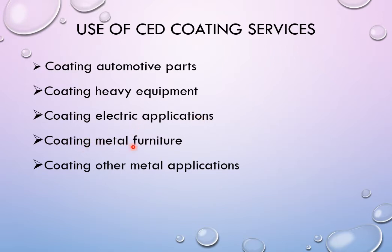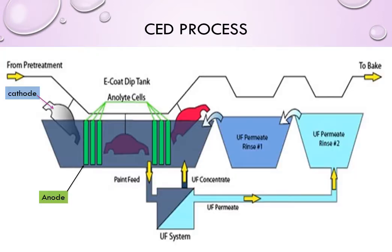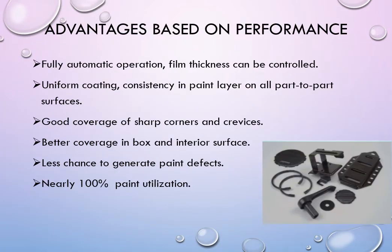You can also use it for coating metal furniture — you can easily apply the coating on components having some kind of metal furniture and other metal applications as well. It is a fully closed-loop system with no loss of paint. Whatever excess paint goes with the component, in UF1 and UF2 it will be sprayed with nozzles and will come back again into the CED tank, so there is no loss of paint.